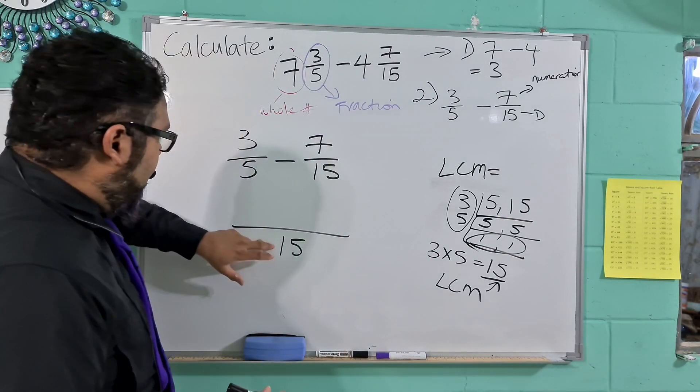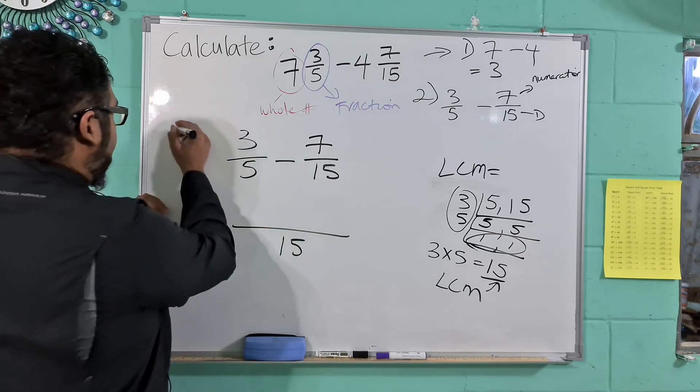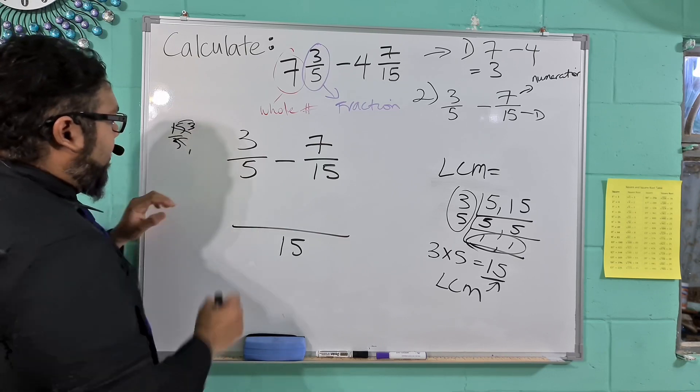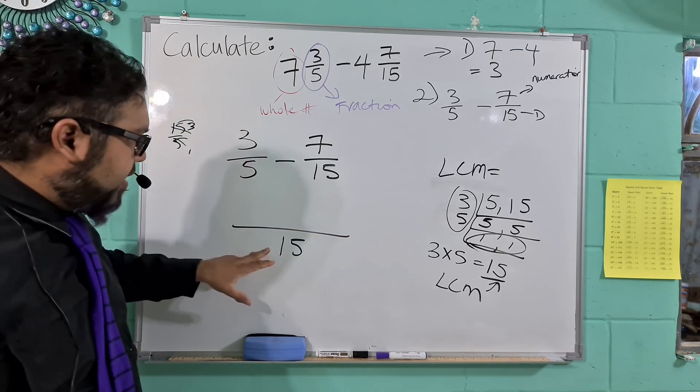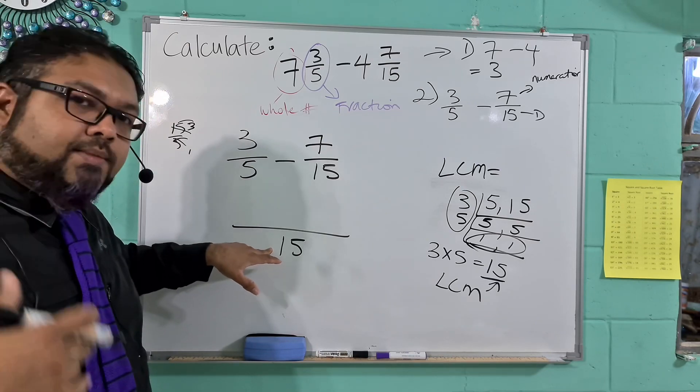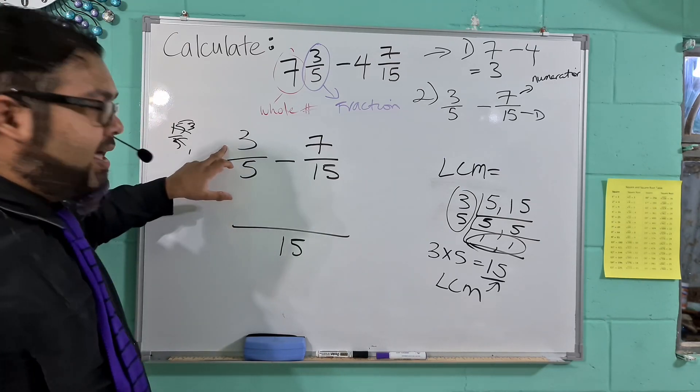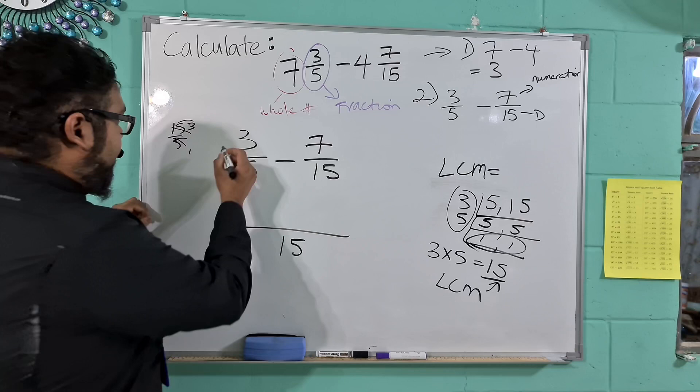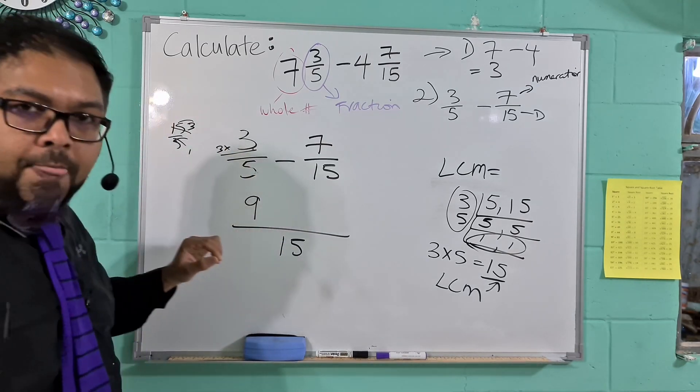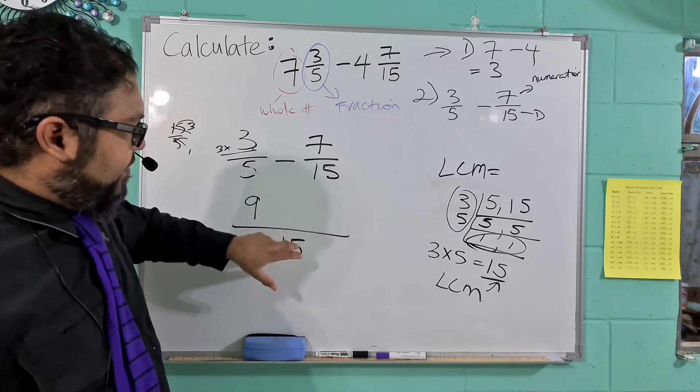So 15 divided by 5. We can say 15 divided by 5, 5 into 5, 1. So it'll be 3. So this could go into the new denominator, the LCM, 3 times. So to make it equivalent, we multiply the top number by 3. So 3 by 3, 3 by 3 is 9. Bring it down here. Minus 7 over 15. 15 over 15 equals 1. So 1 by 7 is 7 minus.